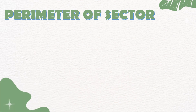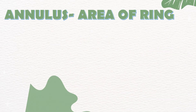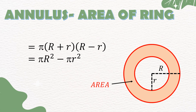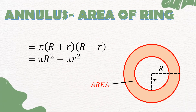Perimeter of sector is equal to (θ/360) × 2πr + 2r, or (θ/180) × πr + 2r. Annulus area of ring is equal to π(R + r)(R − r), which is equal to πR² − πr².